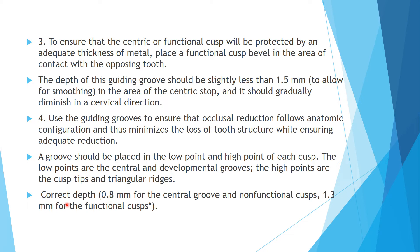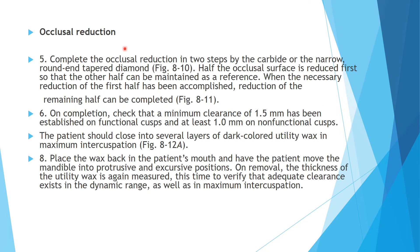The depth is 0.8 mm for the central groove and non-functional cusp, and 1.3 mm for the functional cusp. For occlusal reduction, complete it in two steps using a carbide or narrow round-end tapered diamond — reduce one half of the occlusal surface first while keeping the other half for reference. On completion, check for minimum clearance: 1.5 mm on functional cusp and 1 mm on non-functional cusp.